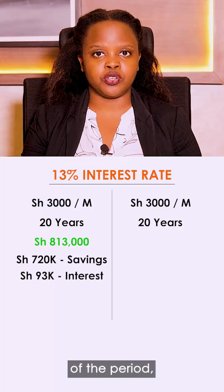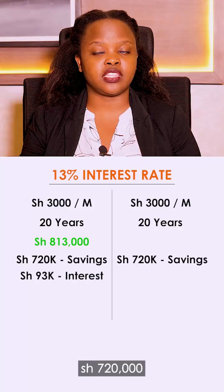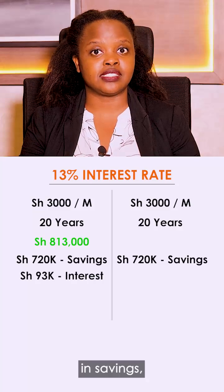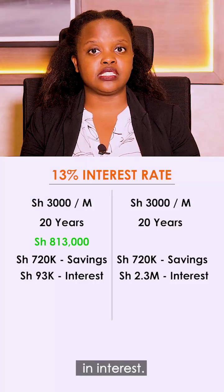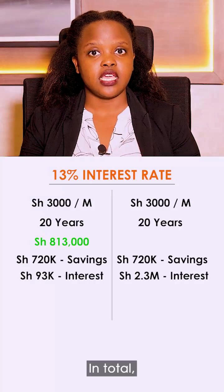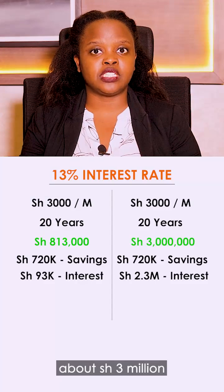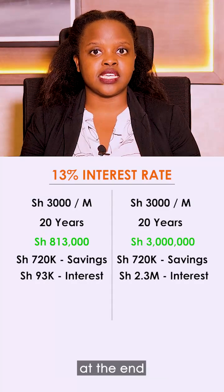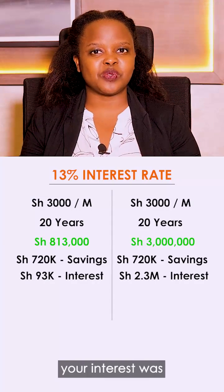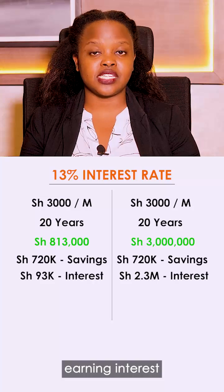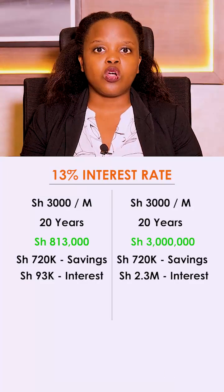At the end of the period, you will have earned the same 720,000 shillings in savings, but 2.3 million shillings in interest. In total, your investment will have yielded about 3 million shillings at the end of the period. This is because your interest was earning interest and therefore grew exponentially over the period.